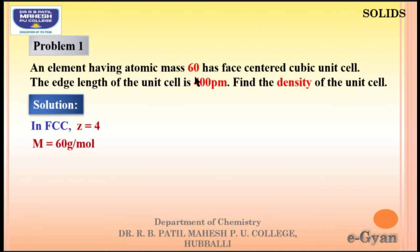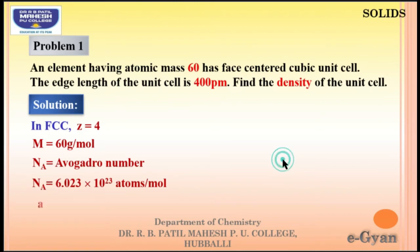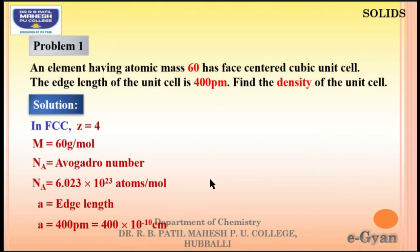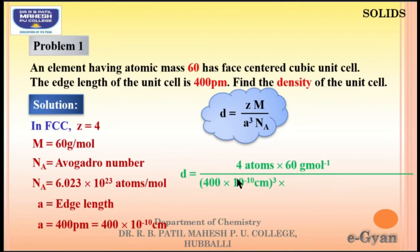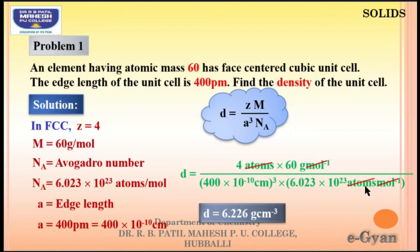Mass M = 60 g/mol. Avogadro's number Nₐ = 6.023 × 10²³. Edge length A = 400 pm = 400 × 10⁻¹⁰ cm. Now calculate density: D = ZM / (A³ × Nₐ). Substituting Z = 4, M = 60, A = 4 × 10⁻¹⁰ cm, and Nₐ = 6.023 × 10²³ — units cancel — and on solving we get 6.226 g/cm³.